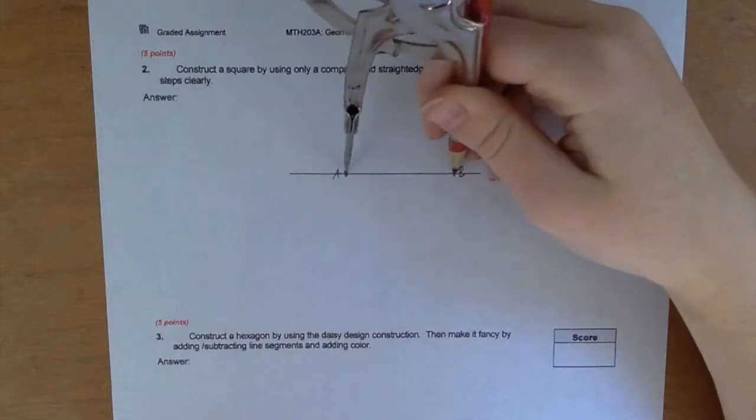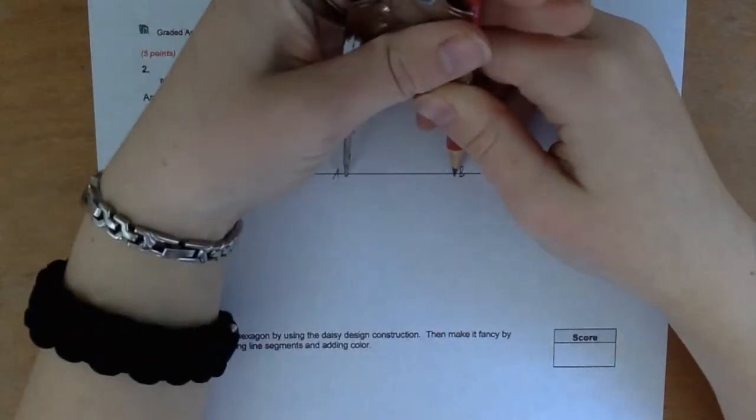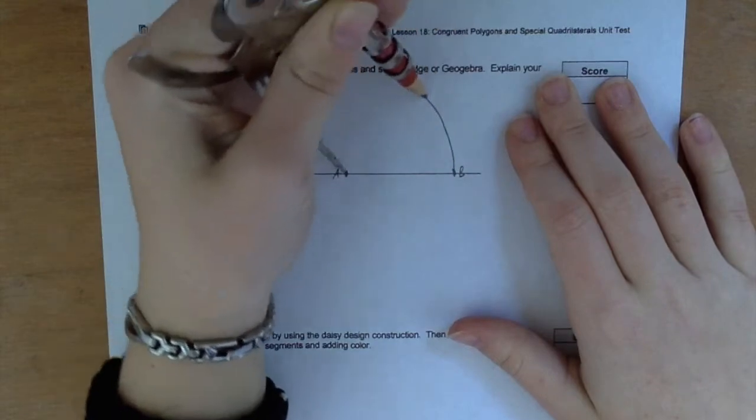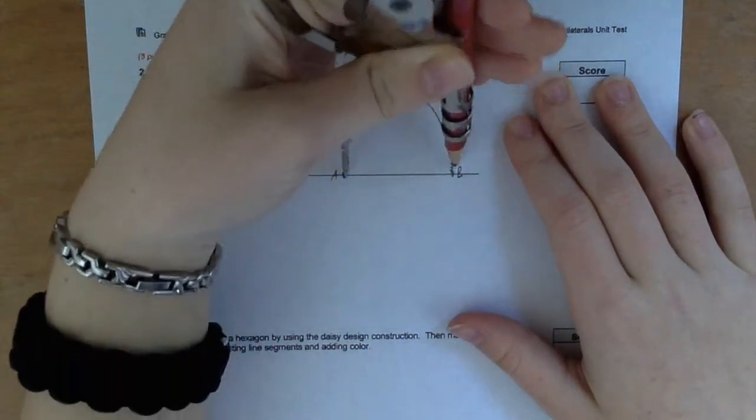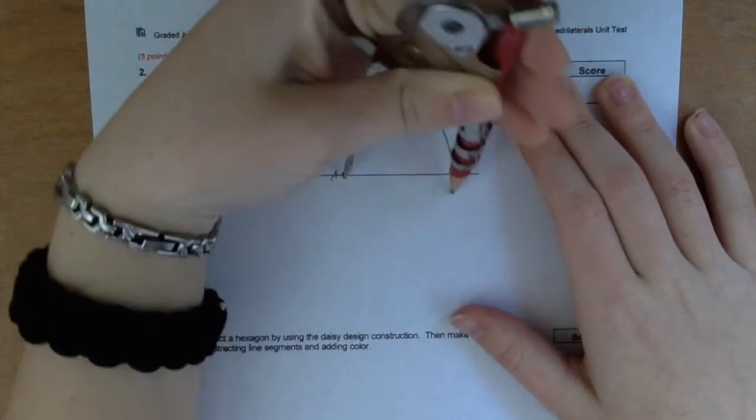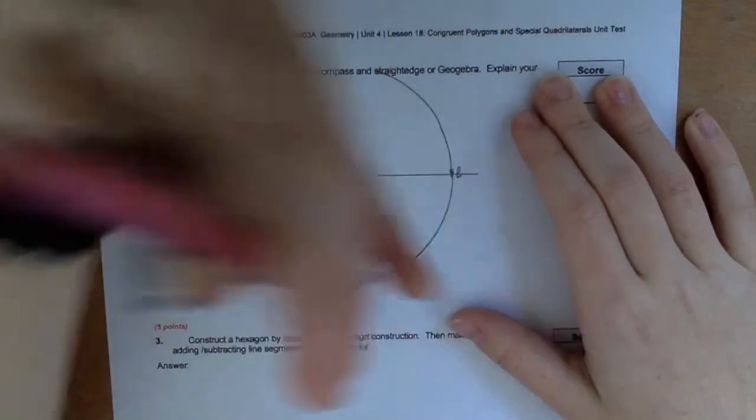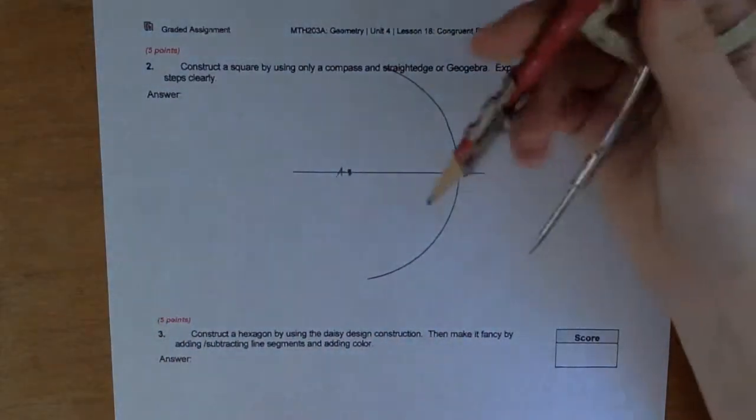So now to make a square, from these two points you've got to create an arc above with your compass lining up with both A and B, and an arc below for each side.